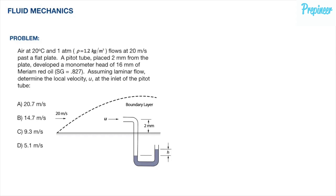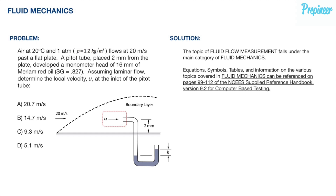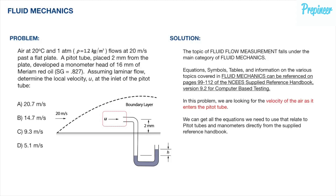The oil has a specific gravity of 0.827. Assuming laminar flow, determine the local velocity at the inlet of the pitot tube. The topic of fluid flow measurement falls under the main category of fluid mechanics. Equations, symbols, tables, and information on the various topics covered in fluid mechanics can be referenced on pages 99 through 112 of the NCES supplied reference handbook version 9.2 for computer-based testing.